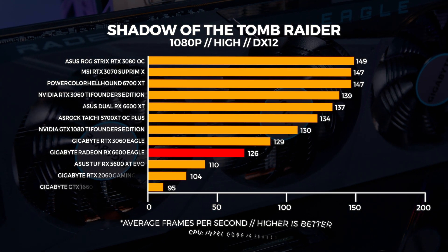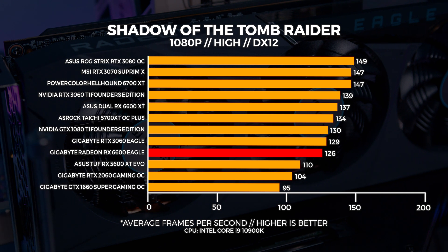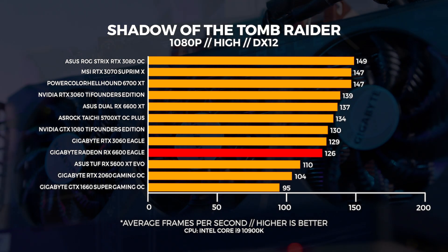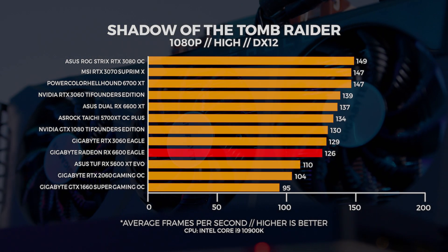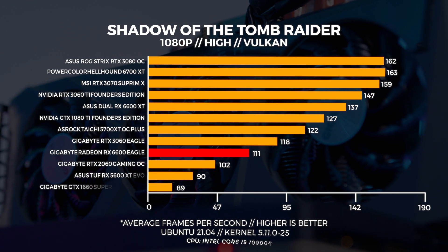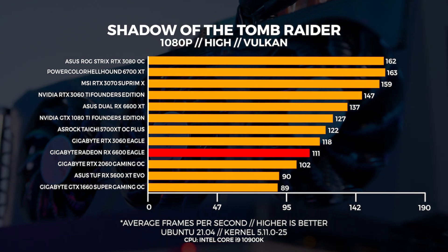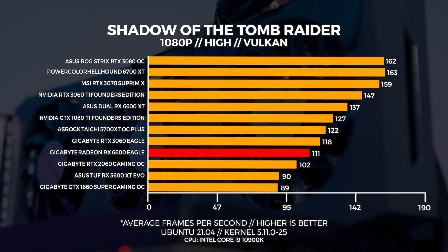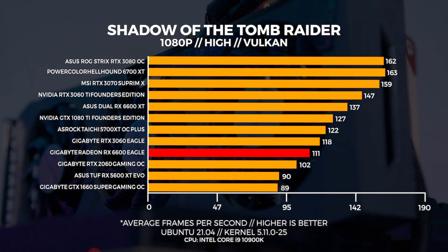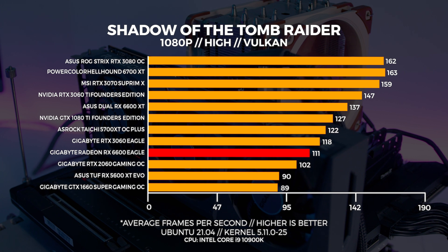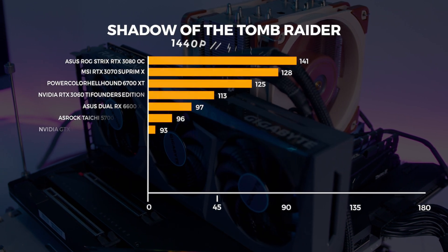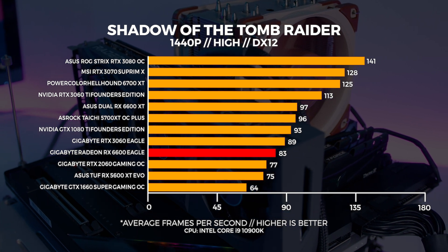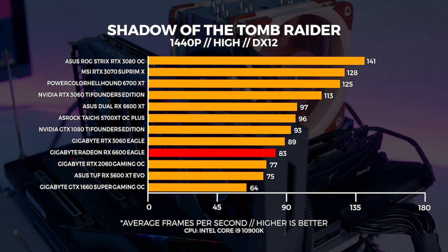At 1080p the 6600 comes in just behind the 3060, and that's kind of the gist of this GPU in general — however, how far behind is an entirely different story. In Linux at 1080p the gap between the 6600 and the 3060 is much larger. Note that I've dropped the direct Windows to Linux comparisons for this video due to time constraints, as this card arrived quite late in our testing cycle. In Windows at 1440p we're seeing more of the same, with the 6600 coming in behind the 3060 but with a slightly larger gap.